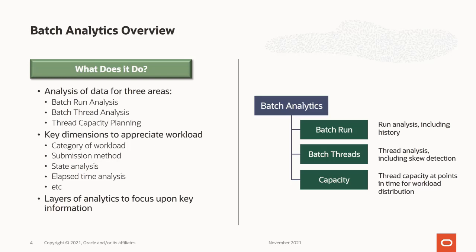The Batch Analytics tool looks at processing over time in three key areas. Batch run analysis, analysing the workload at the highest level for individual executions for individual processes over time. Batch thread analysis, which is analysing workload at individual thread level for individual executions for individual processes over time. And thread capacity, subdividing a day into 10-minute intervals to allow assessment of workload in each interval for possible workload redistribution. Supporting these analytics is a set of dimensions included and calculated to allow for the data to be sliced and analysed appropriately. These include the category of the workload, which is handy for tracking the impact of exports and imports out of the service. Submission method to detect how and who initiated the workload for compliance checking. State analysis to recognise the trends for processing. Elapsed time analysis to recognise when processing needs to be re-optimised to meet your business goals. All this information is layered to allow appropriate levels of analysis for your business needs.